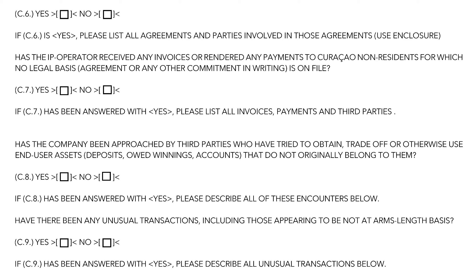Section C8 concerns a specific kind of potential fraud, namely the trading in players' accounts and deposits. Any form of account trading should be reported. Question C9 requires a full list of any unusual transactions in this quarter. I am providing more information on what is potentially unusual in chapters C2, C4, and C6. I kindly refer you to the main page on AML, which can be found under /AML.